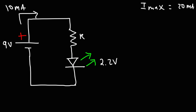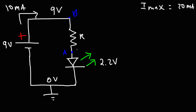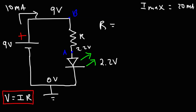Assuming the voltage drop is 2.2 volts — it could change based on the current — here's what we need to do. We assign the ground a potential of 0 volts. Let's call this point A and point B. Point B is connected to the positive terminal of the battery, so point B is at a potential of 9 volts. Point A is at a potential of 2.2 volts due to the voltage drop of the LED. To calculate the resistance, we use Ohm's law: V equals IR, so R equals V divided by I.